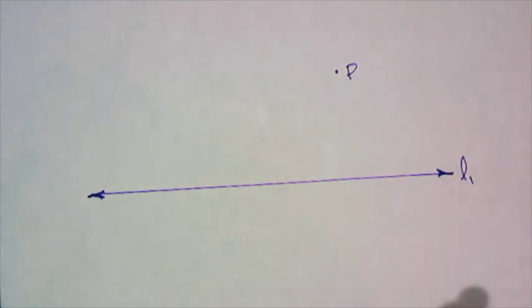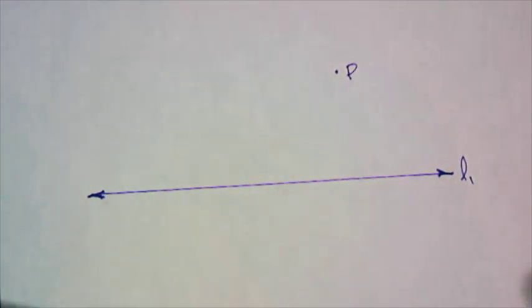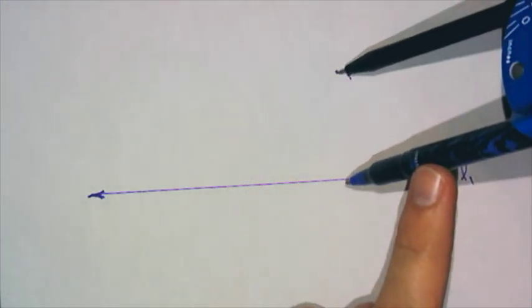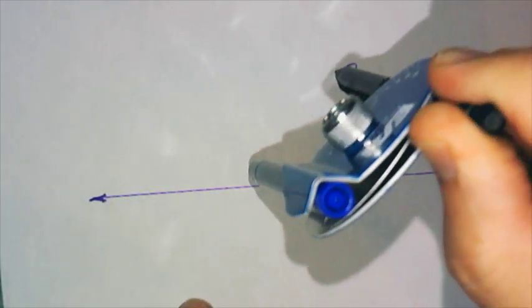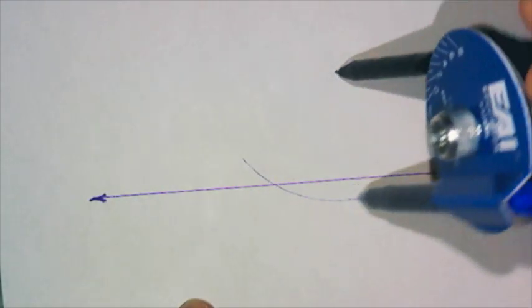Alright, first step, stab point P. Have your compass large enough so that it intersects the line twice. Once, twice.